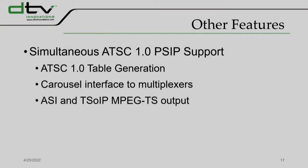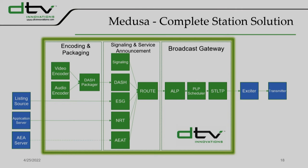Our main output interface is the STLTP. Alternatively, we can also output earlier points — the ROUTE or ALP over UDP — and we can export tables in XML format for inspection or for other equipment. MetaRite also supports 1.0 products as well, mostly PSIP, which can either be carousel supporting legacy products such as Harmonic or a TEM, or it can be a transport stream over IP.